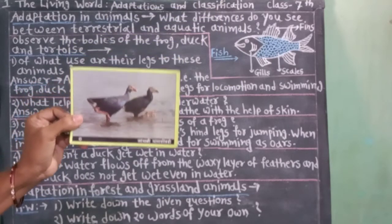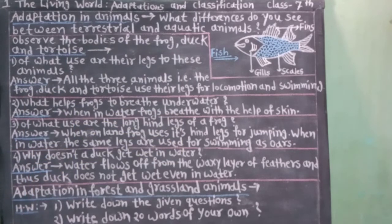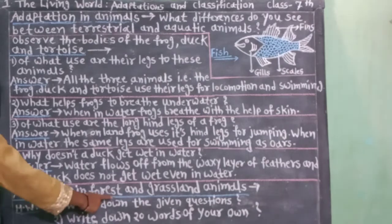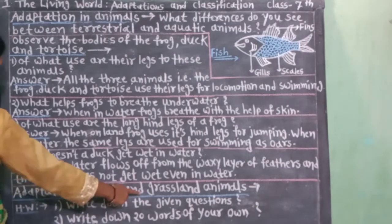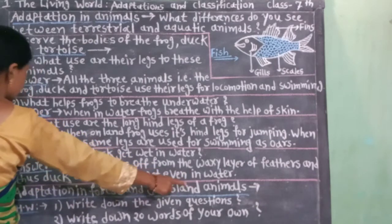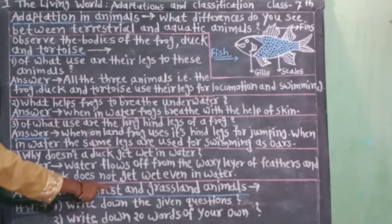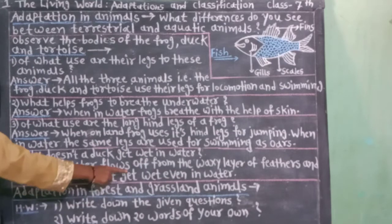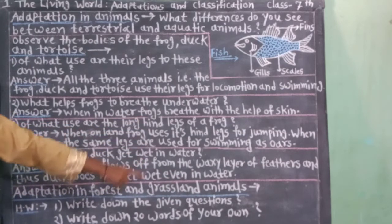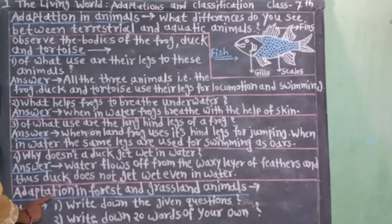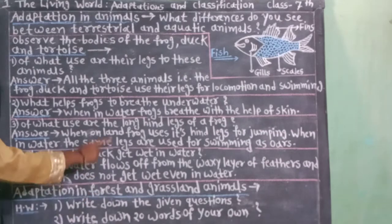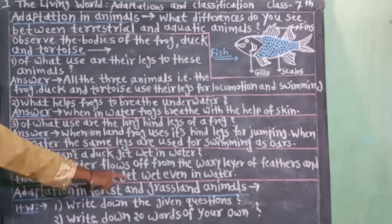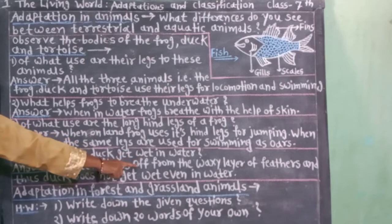Then your next paragraph. Adaptation in forest and grassland animals. Jungle were gautar pradesh yathikani adhanarya pranayan madilanu kulan.